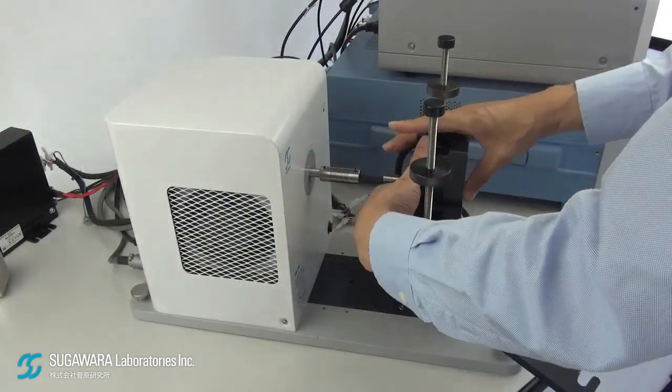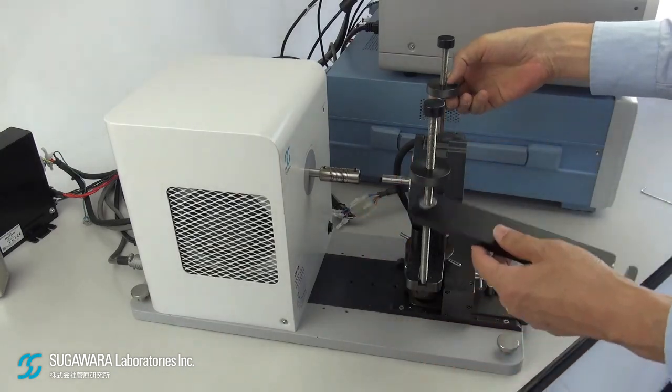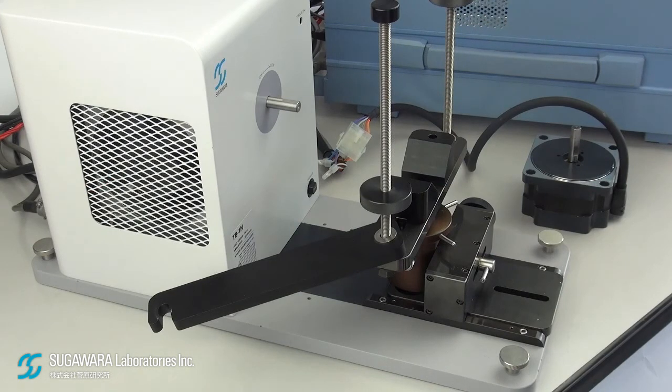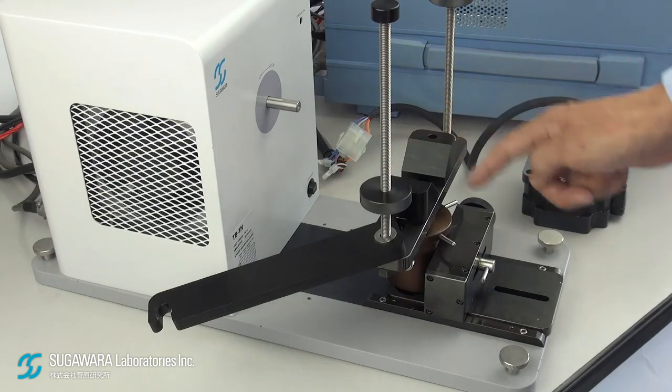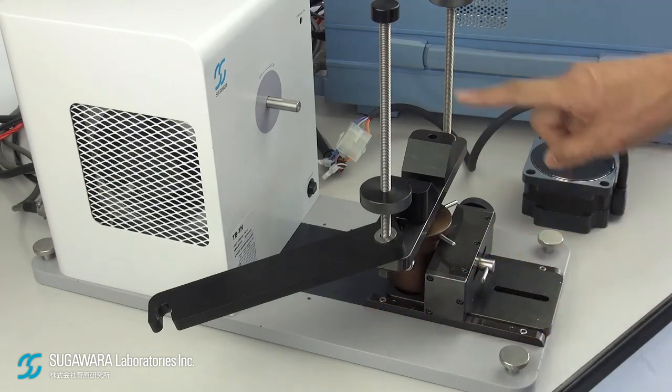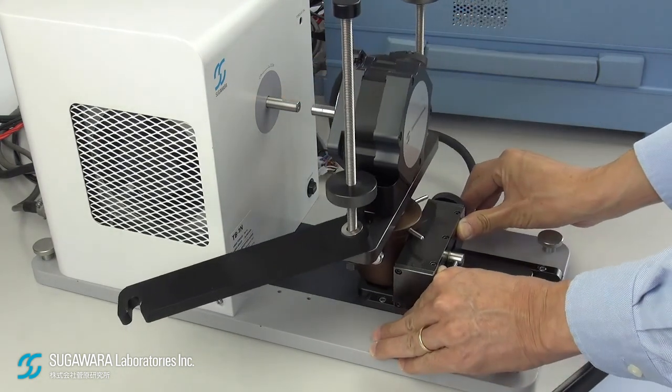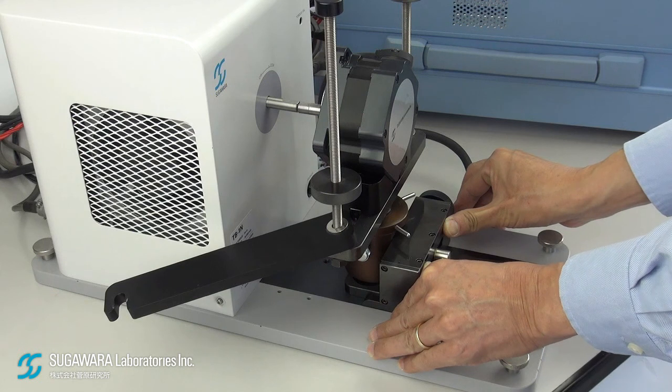Mount the motor on the motor fixture and couple its shaft with the tester shaft. In our standard motor fixture, the V-block, slide guide, and tester shaft are parallel to each other, enabling precise shaft alignment.